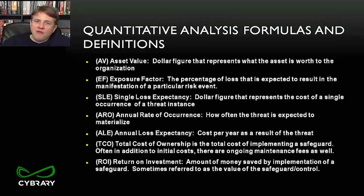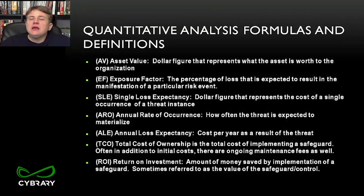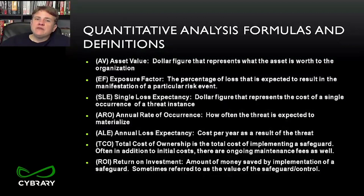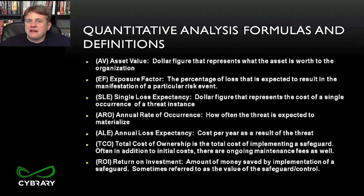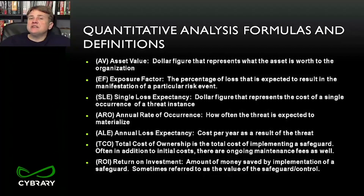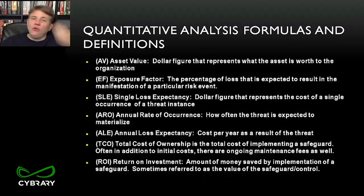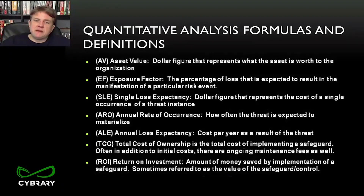Annual rate of occurrence tells you how frequently per year this event will happen — that's the probability. Exposure factor is the impact: how much you'll lose. Ultimately we want the annual loss expectancy — how much you spend on a particular risk per year. With $100,000 of data, a 50% exposure factor gives a single loss expectancy of $50,000. If that loss happens three times per year, your annual loss expectancy is $150,000.